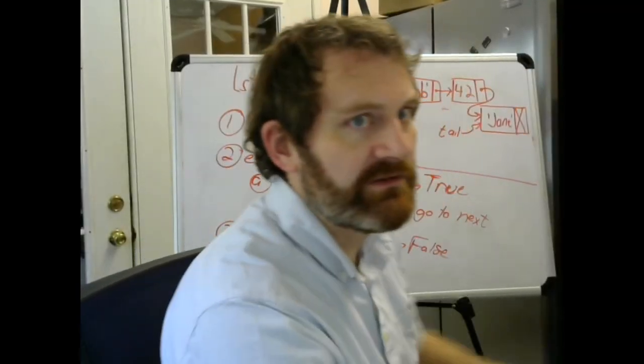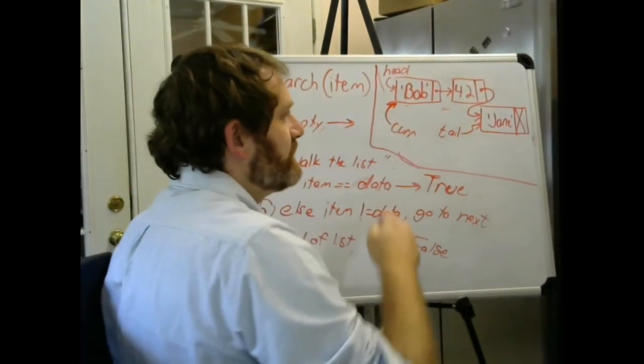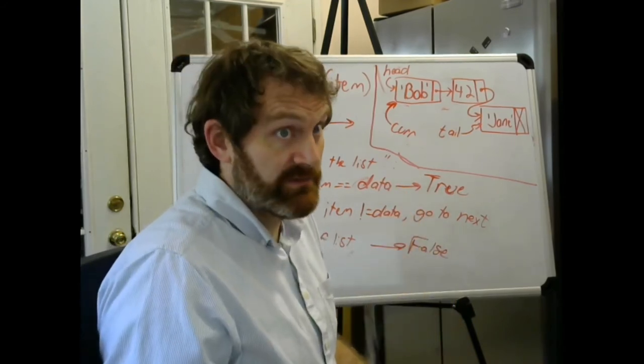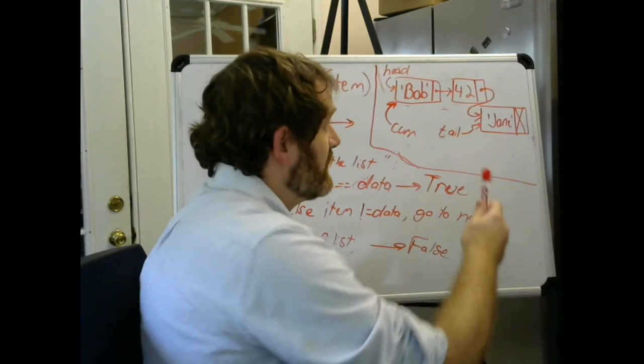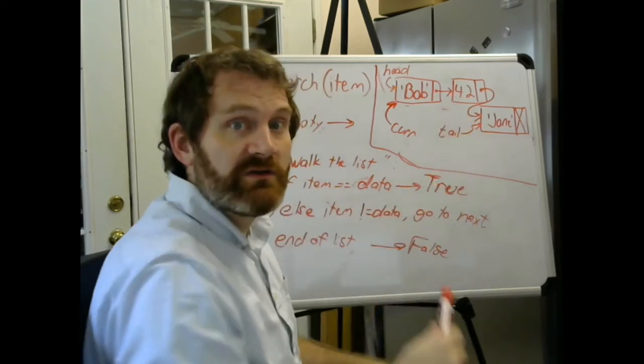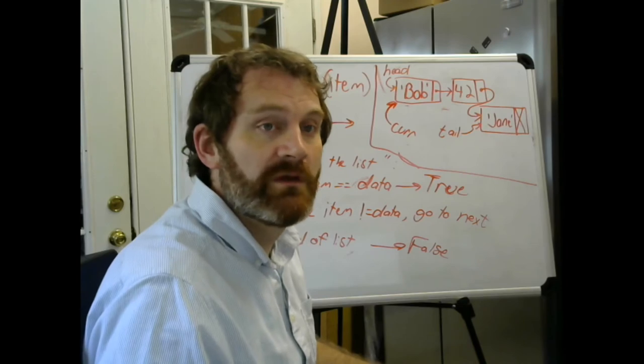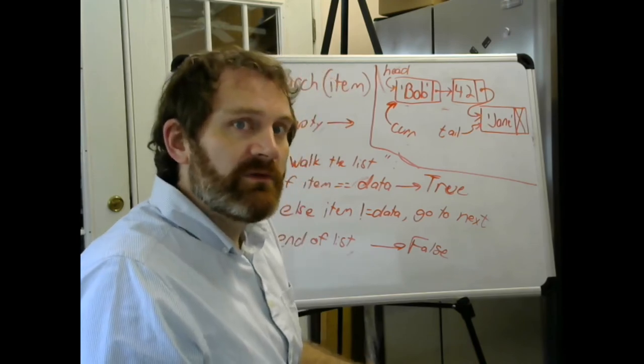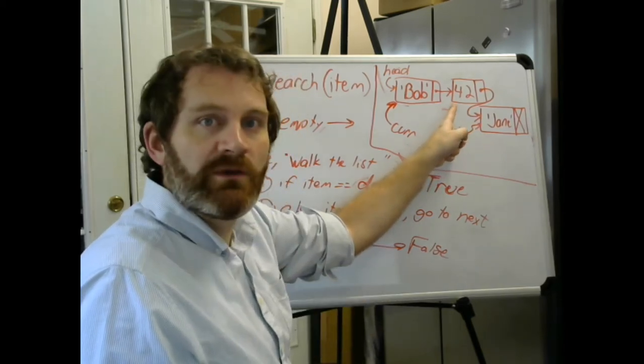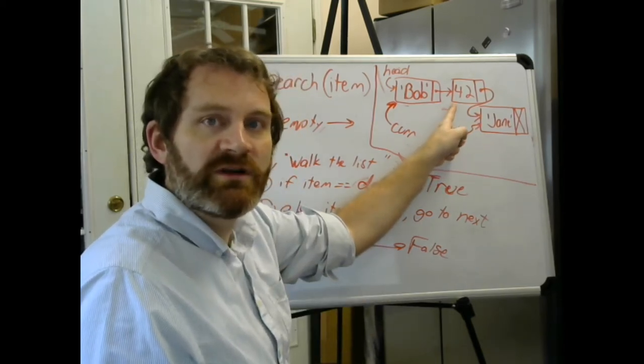I need to move cur down a slot. Let me go back to my document. It's a really critical point. Cur is here. Now, how do I get cur, this variable, to go here, to the node containing 42? Well, there is already a reference to the node 42. Who knows where the node 42 is? Bob's node does.